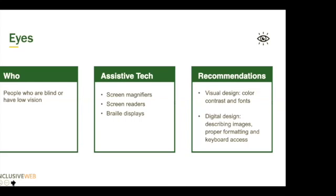Assistive technology: screen magnifiers might be something that a person with low vision uses. Screen readers is a technology that I use — it's a synthesized voice that reads what is on the screen. Braille displays, similarly to screen readers, but instead of hearing the information, there's a device that has pins that go up and down and represent Braille in real time. You can connect that to your computer or phone and use your devices with a Braille display.